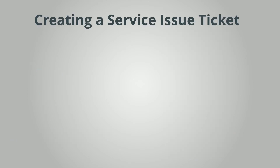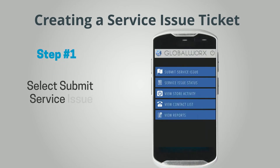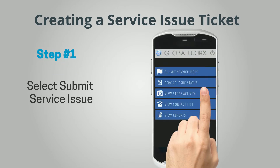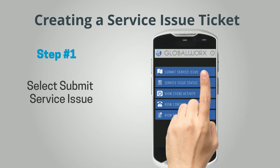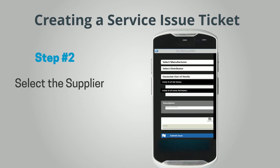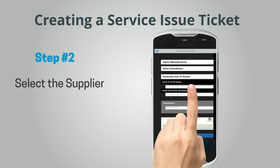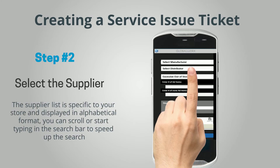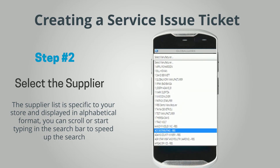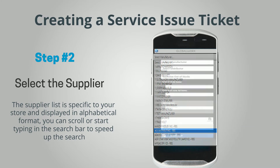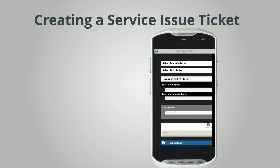Creating a Service Issue Ticket. Step 1: Select Submit Service Issue from the main menu. Step 2: Select the Supplier. The supplier list is specific to your store and displayed in alphabetical format. You can scroll or start typing in the search bar to speed up the search.